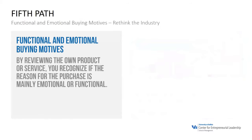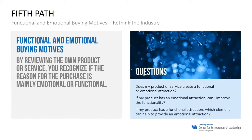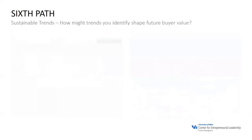The fifth path is to explore functional and emotional buying motives — rethinking the industry. Does my product or service create a functional or emotional attraction? Does it improve functionality in some way? If it has functional attraction, what can provide an emotional attraction? A lot of this relates to the work of Simon Sinek — it starts with why. It's not just about what you sell or how you sell it, but why you sell it. Anytime you find an emotional buying motive, I believe you have great competitive advantage and an opportunity to create a blue ocean.